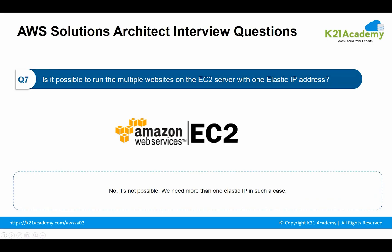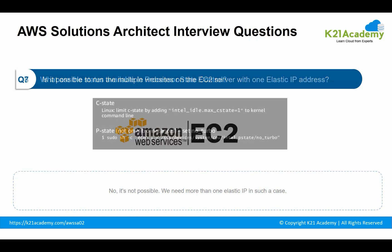Question 7: is it possible to run multiple websites on an EC2 server with one elastic IP? The answer is no, it is not possible. We need more than one elastic IP if we are running multiple websites on EC2 servers.